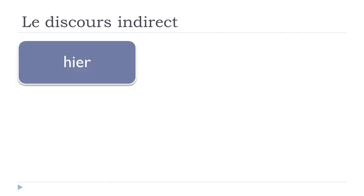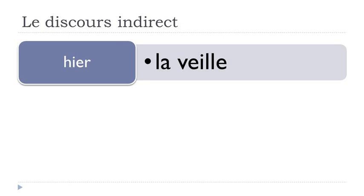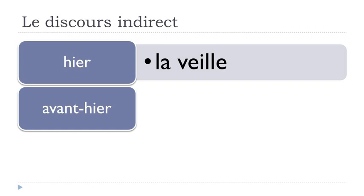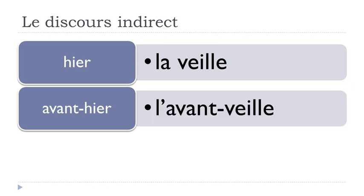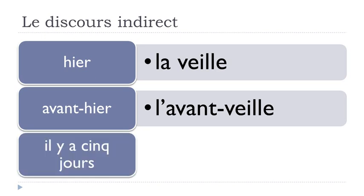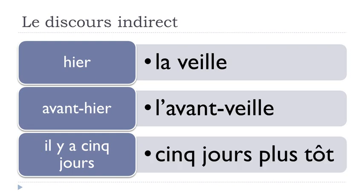Hier (yesterday) becomes la veille. Avant-hier (the day before yesterday) becomes l'avant-veille. Il y a cinq jours — remember the il y a structure means 'ago', so cinq jours means 'five days', il y a cinq jours means 'five days ago' — becomes cinq jours plus tôt (five days earlier). So: hier → la veille, avant-hier → l'avant-veille, il y a cinq jours → cinq jours plus tôt.